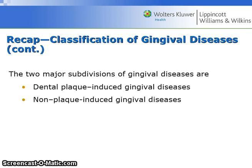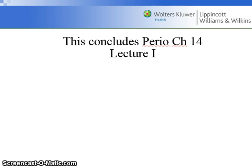Gingival diseases are the most common and mildest form of periodontal disease. The two major subdivisions are dental plaque-induced and non-plaque-induced. This concludes Perio Chapter 14, Lecture 1.